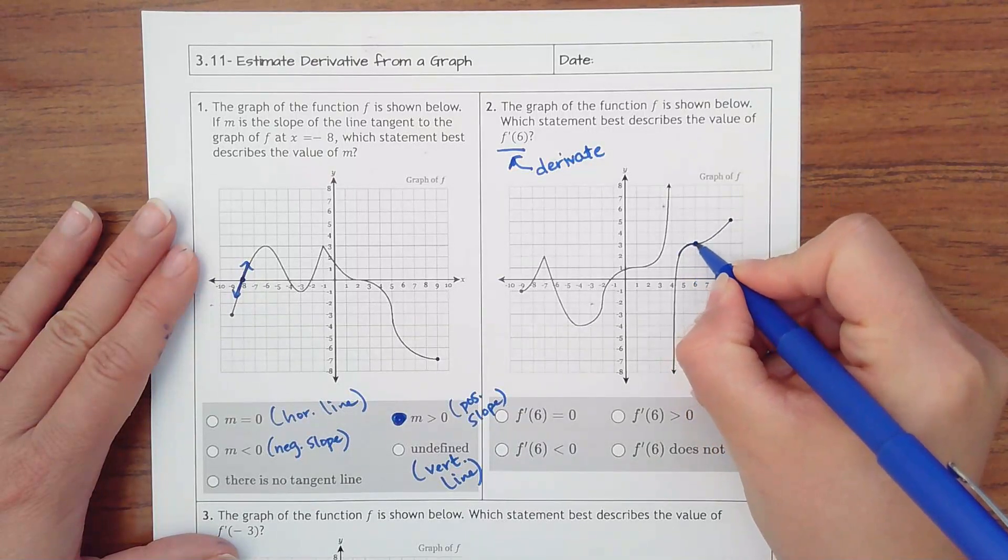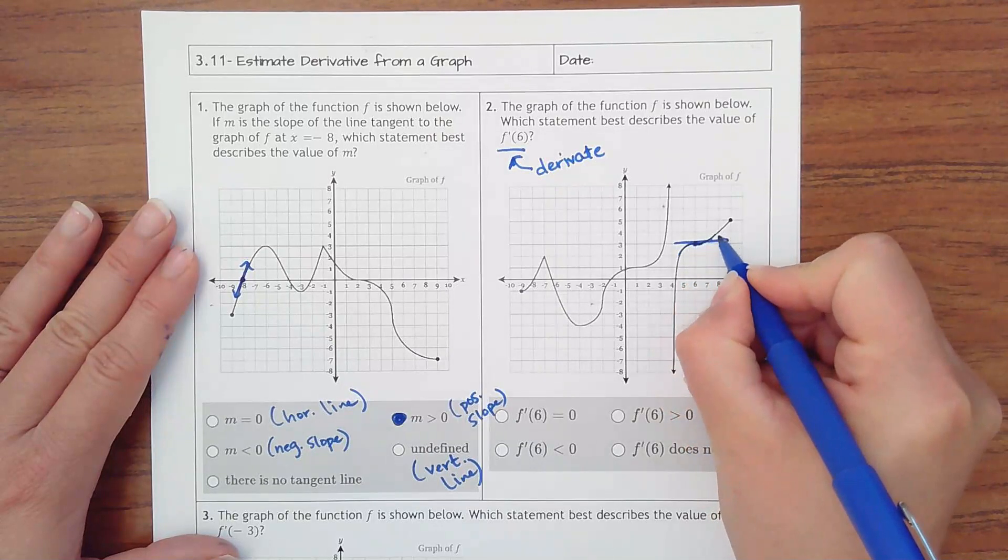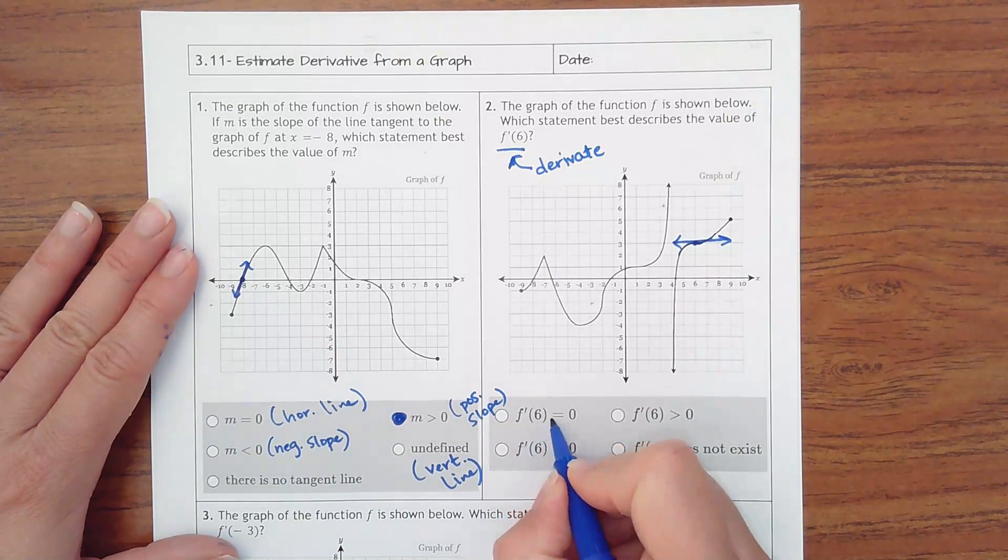You can see how this curve flattens out momentarily and then goes up. So that tangent line would actually be horizontal. You want to pick where the slope, or f prime of 6, is 0.